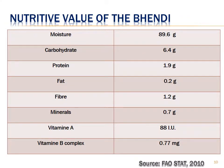Nutritional value of okra: it consists of moisture content of around 90 grams, carbohydrate 6.4 grams, protein 2 grams, fat 0.2 grams, fiber 1.2 grams, minerals 88 IU, and Vitamin B complex 77 mg.